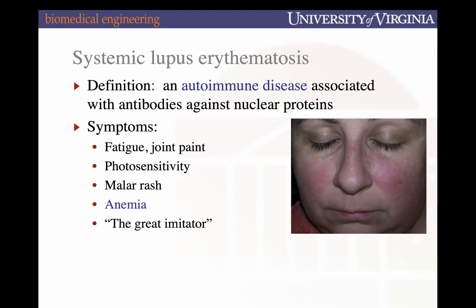Because symptoms like fatigue, joint pain, anemia, and photosensitivity are pretty broad and general, it's hard to clinically identify lupus early — it can often present as something else. Because of this, it's oftentimes not diagnosed until early adulthood. The current clinical standard for diagnosing lupus is finding autoantibodies against nuclear proteins.